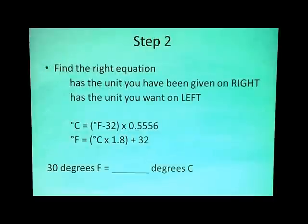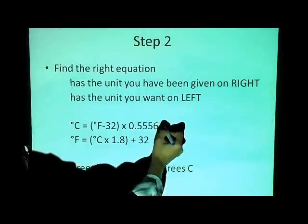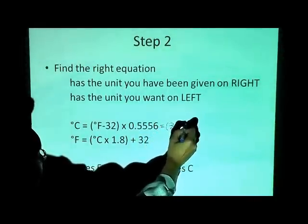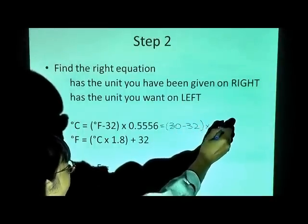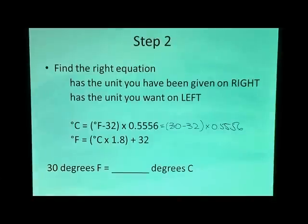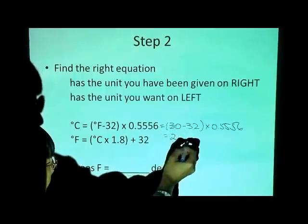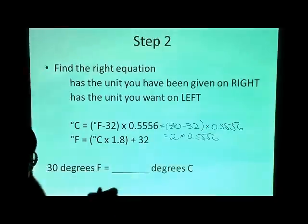So let's go back and do this problem. So if this is the equation that you're looking for, we're giving you 30 degrees, right? So 30 minus 32 times 0.5556. So the answer is negative 2 times 0.5556.